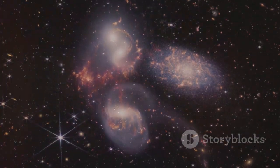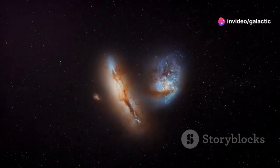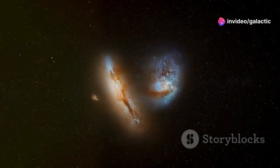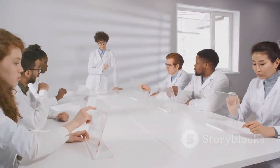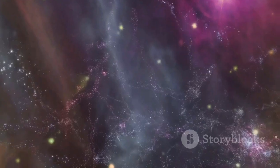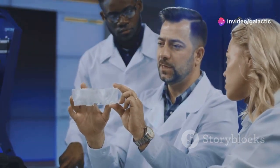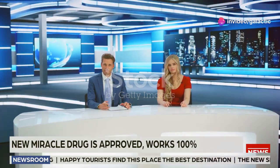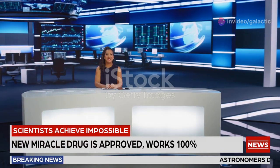Galaxies massive and mature existed far earlier than expected. These anomalous galaxies challenge our understanding of cosmic evolution. How could such large structures form so quickly after the Big Bang? Current theories struggle to explain it. The universe, it seems, had a head start. These discoveries have sent ripples through the scientific community. They hint at unknown processes in the early universe. The very foundations of cosmology are being questioned.